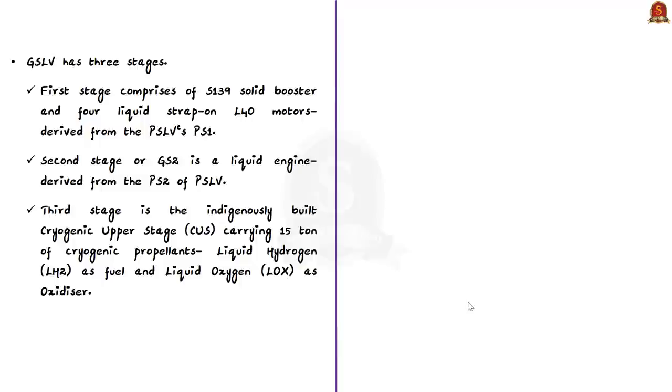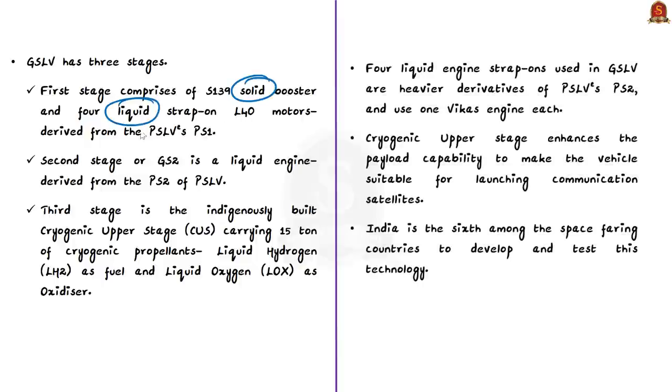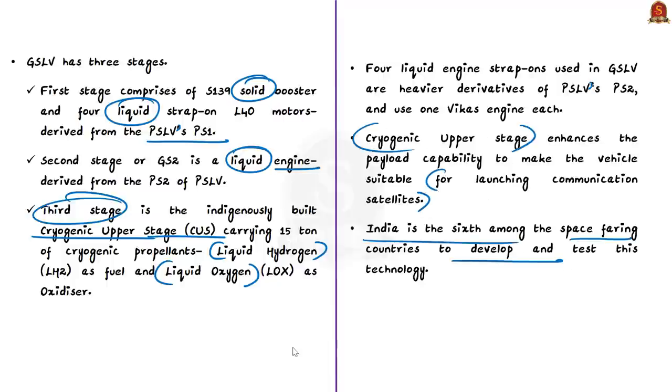The GSLV has three stages. The first stage comprises of S139 solid booster and four liquid strap-on L40 motors, derived from the PSLV's PS1. The second stage or GS2 is a liquid engine derived from PS2 of PSLV where the Vikas engine has proved its reliability. The third stage is the indigenously built cryogenic upper stage which carries 15 tons of cryogenic propellants, liquid hydrogen as a fuel and liquid oxygen as oxidizer. The cryogenic upper stage employs the vital technology that enhances the payload capability to make the vehicle suitable for launching communication satellites. India is the sixth among space-faring countries to develop and test this technology.